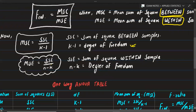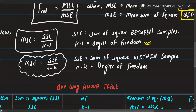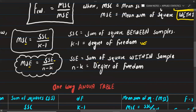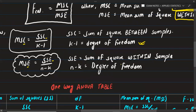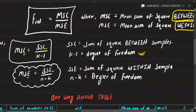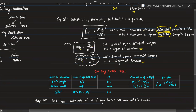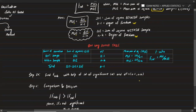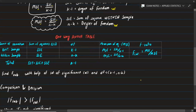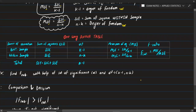The formula for MSE is SSE upon n minus k. SSE is the sum of squares within samples. The degree of freedom for MSC is k minus 1, and for MSE it is n minus k. Using these, we can fill in the ANOVA table easily.